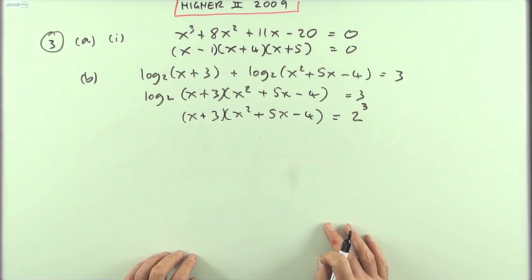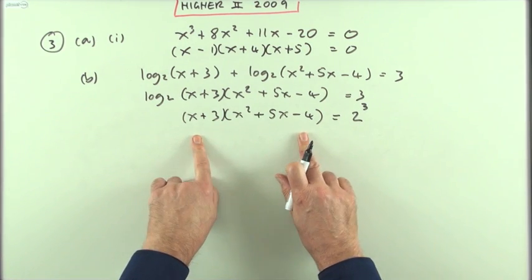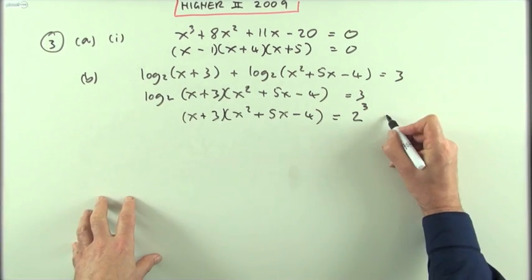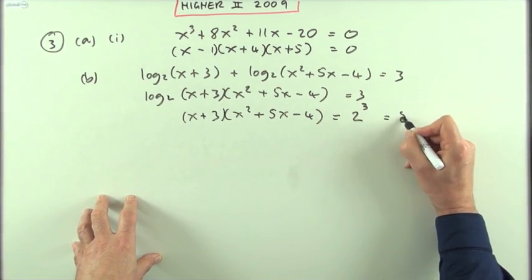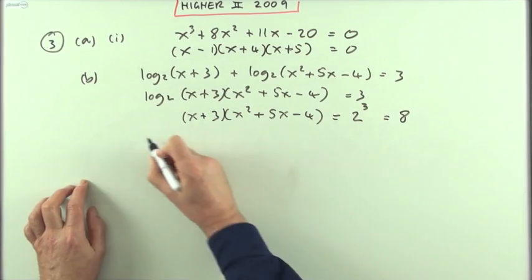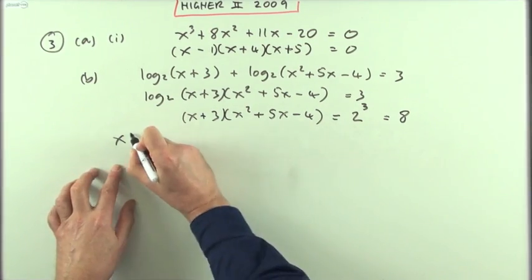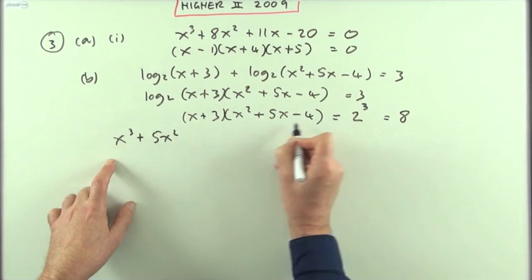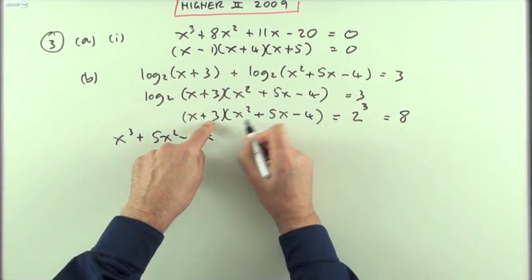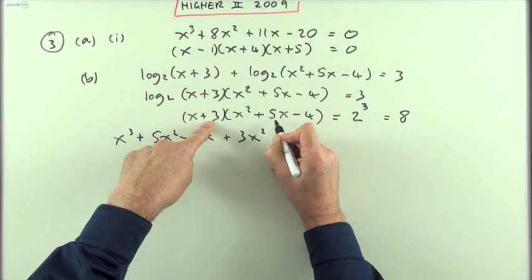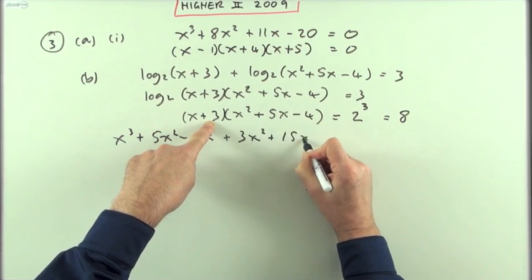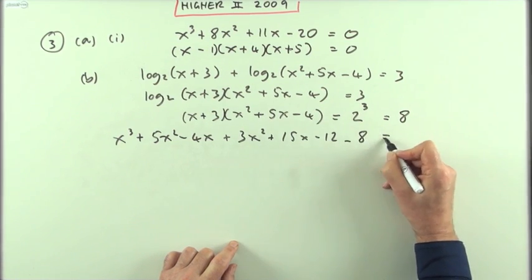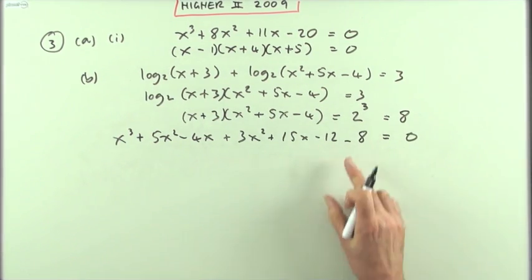Now I'm back to a normal looking equation. It's a useless factorization though because it's not equal to 0, so I'll just have to unravel it all and gather it again. 2³ is 8. I'll multiply it all out: x times everything gives x³ + 5x² - 4x, and then 3 times everything gives 3x² + 15x - 12 equals 8. Bring the 8 over as well: minus 8 equals 0.